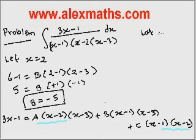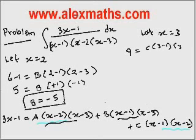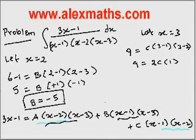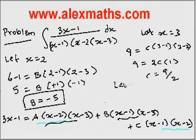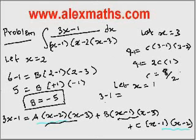Let x equal to 3. The first two terms become 0 because they contain x minus 3, leaving C into 3 minus 1 into 3 minus 2. So 9 minus 1 equals 8, giving 8 equals 2C, so C equals 4.